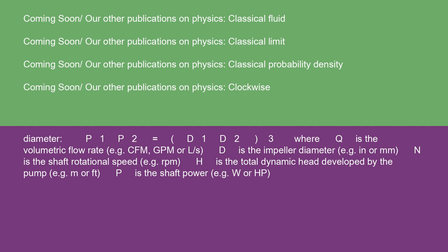where Q is the volumetric flow rate, e.g. CFM, GPM, or L/s. D is the impeller diameter, e.g. in or mm. N is the shaft rotational speed, e.g. RPM. H is the total dynamic head developed by the pump, e.g. m or ft. P is the shaft power, e.g. W or HP.